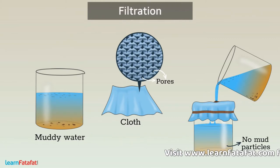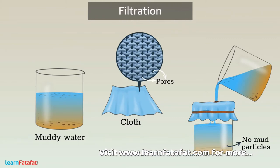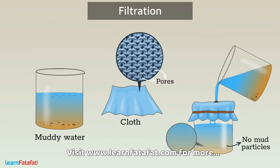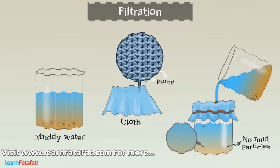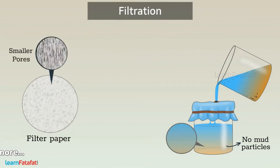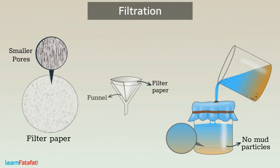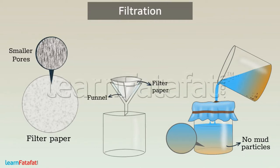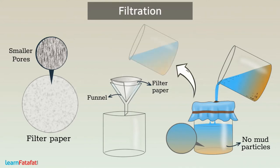By using cloth, there are chances you won't get completely clean water. In such a case, you can use a filter paper which has even smaller pores. It is folded in the form of a cone and placed in a funnel. A utensil is kept below the funnel to collect water. Muddy water is poured into the cone of the filter. The mud particles remain on the filter paper and clean water gets collected in the utensil.